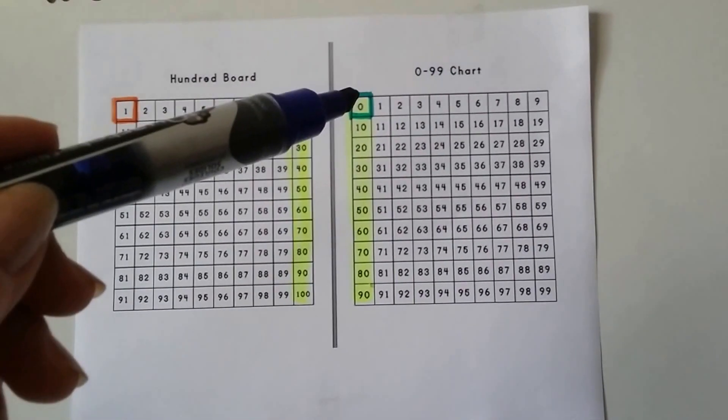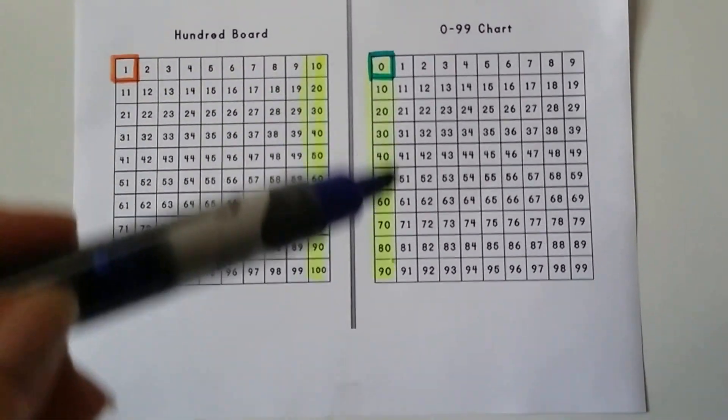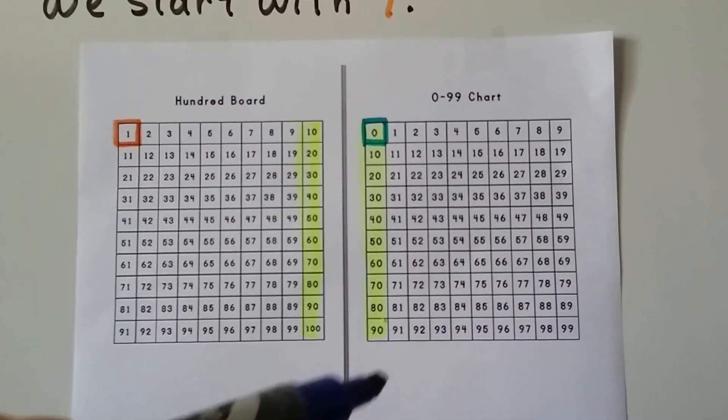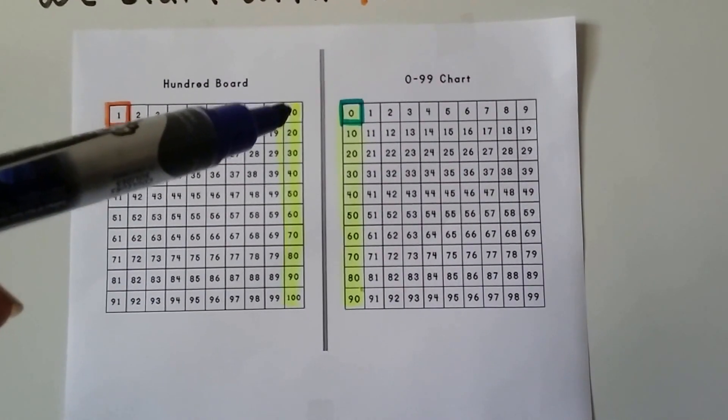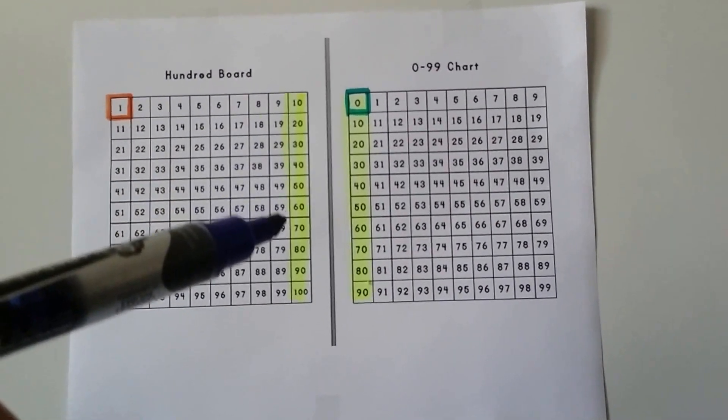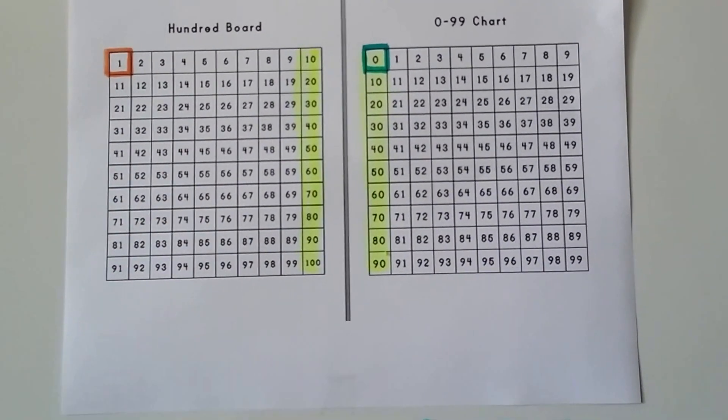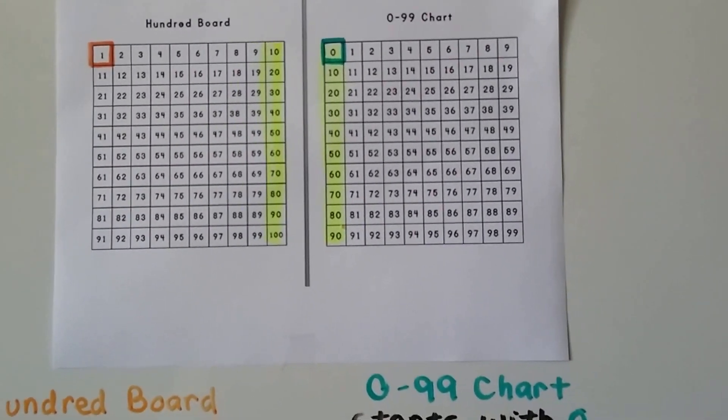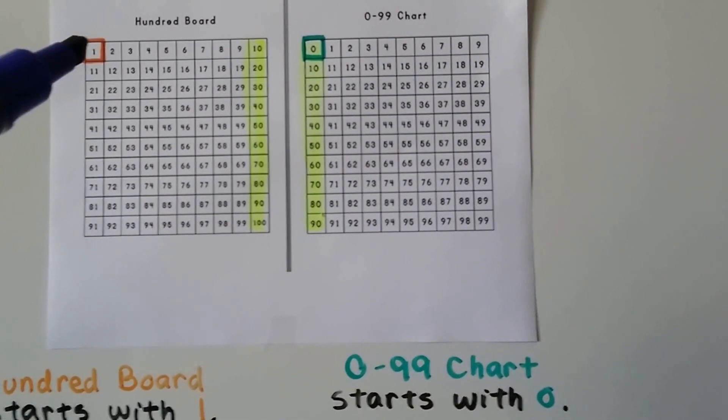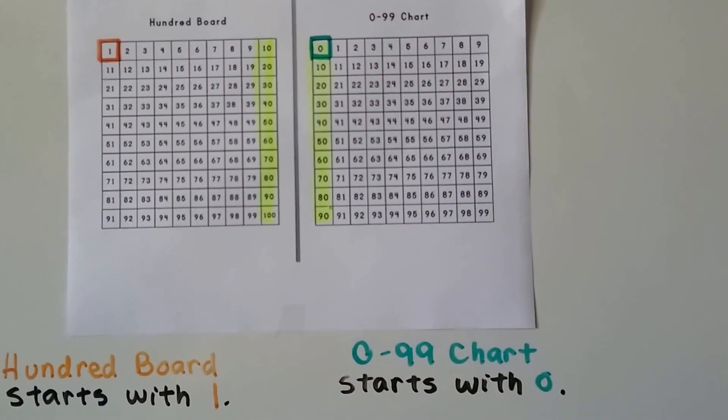When we count by tens it's along the left side of this chart for the 0 to 99 chart. But on the 100 board it's on the right side. And all the 9s in the ones place are next to it here on this chart. They're all at the end. That's a 100 board that starts with a 1. That's a 0 to 99 chart that starts with a 0.